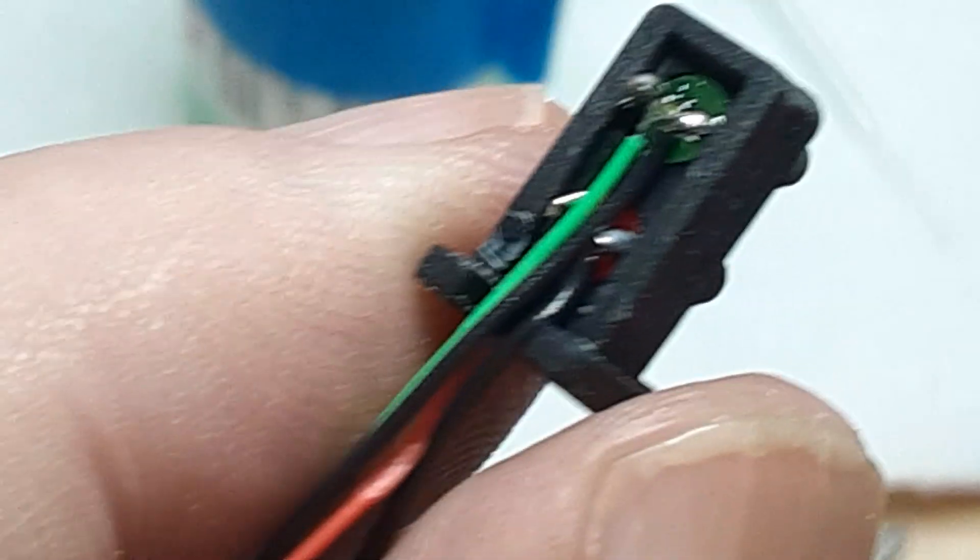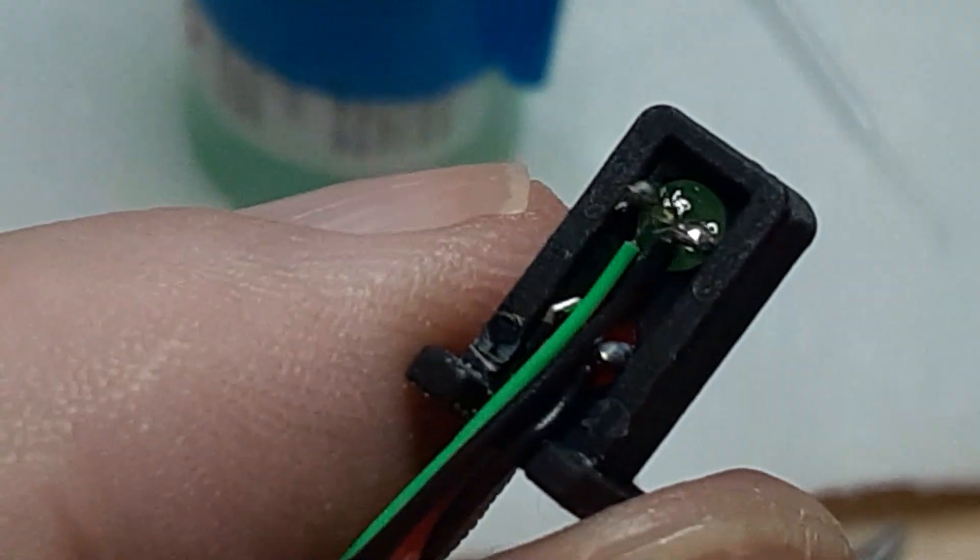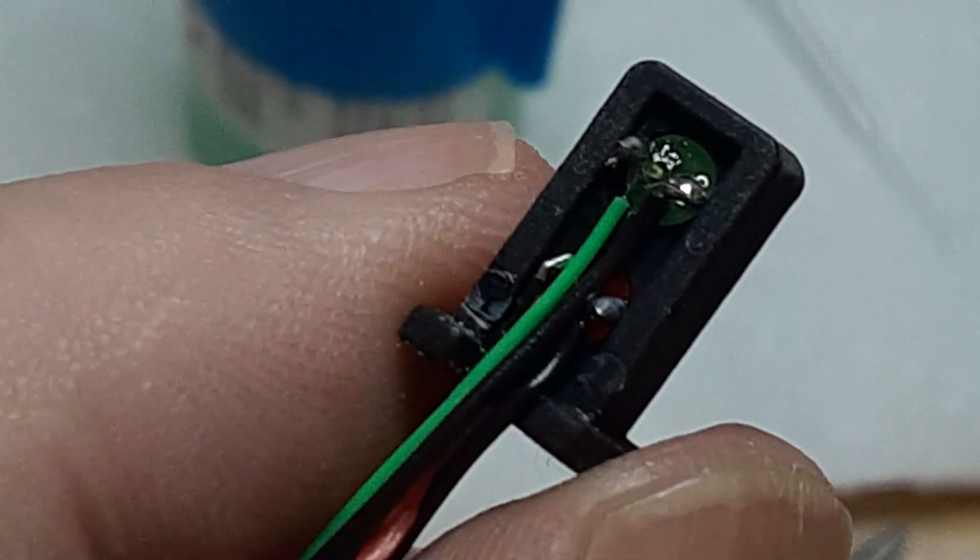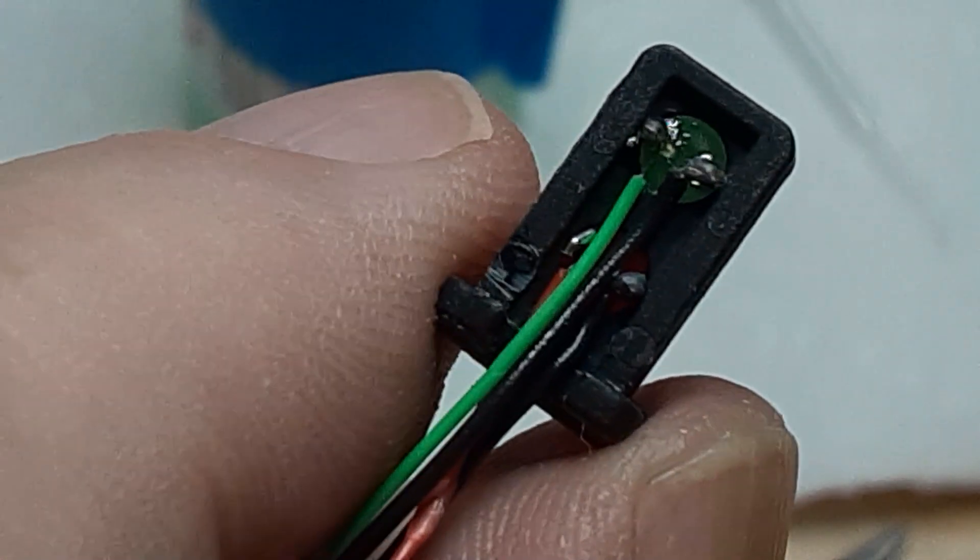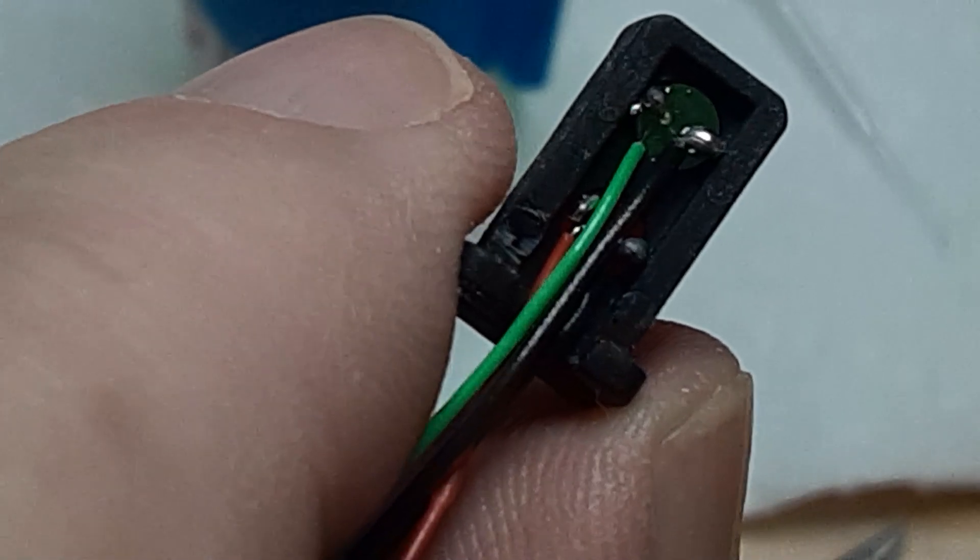Now insert the LEDs into the signal head as far as possible, and fix them in place using superglue. I also apply some thick superglue on the four soldered LED connections for protection against shorts.